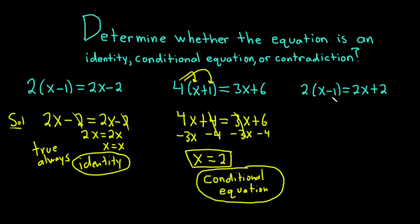This last equation is 2 times x minus 1 equals 2x plus 2. We can take the 2 and distribute it. 2 times x is 2x. 2 times negative 1 is negative 2.